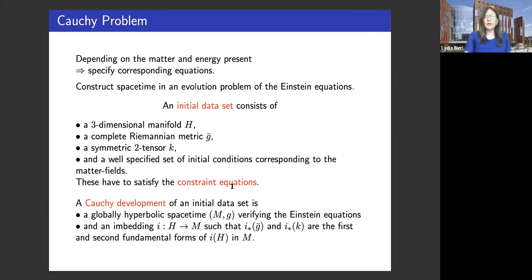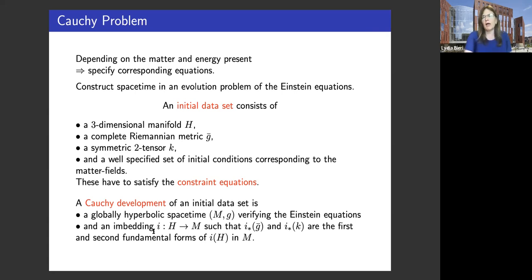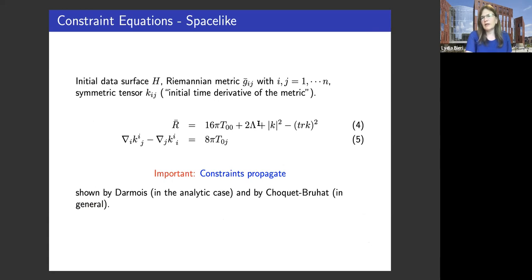What we aim to do is find the Cauchy development — we solve the evolution equations — and the Cauchy development of that data will be a globally hyperbolic spacetime which solves the Einstein equations, with the corresponding embedding of our initial manifold into the spacetime manifold M. I'll mention the constraints propagate — that was shown by Darmois and then by Choquet-Bruhat in the general case. For cosmology, you would add the cosmological term to the Einstein equations, but here this is just zero for us.